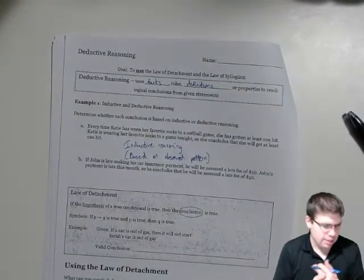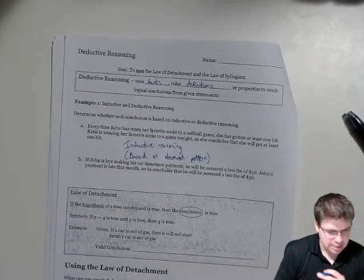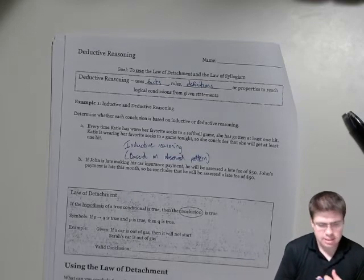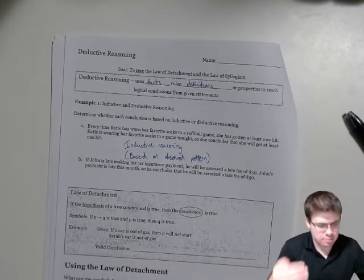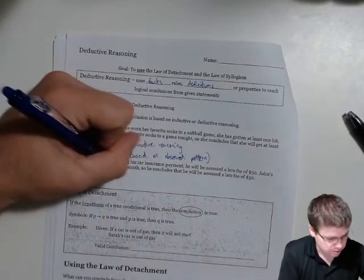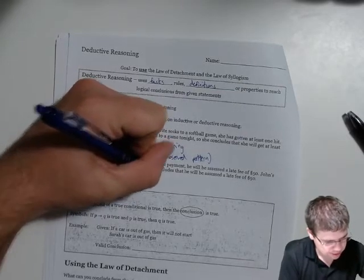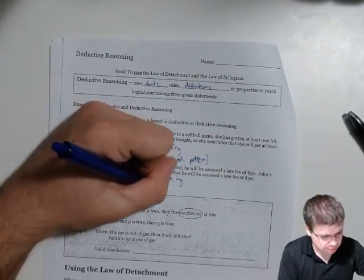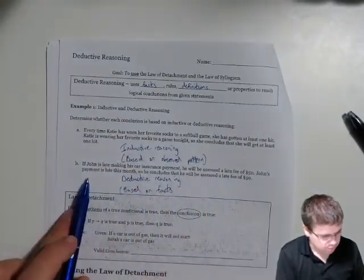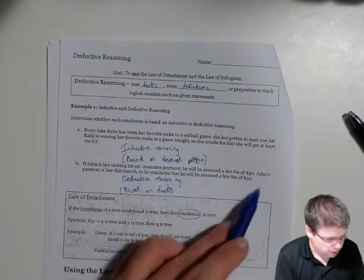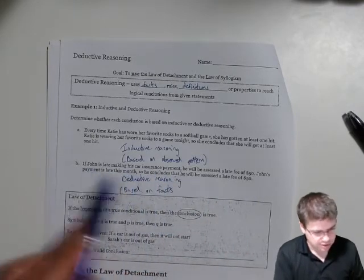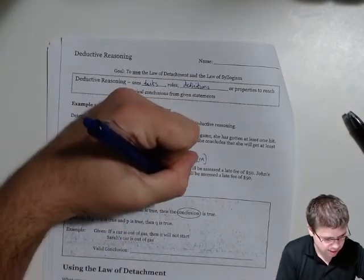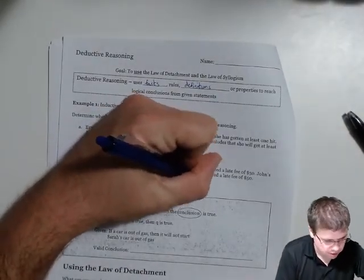And then, if John is late making his car insurance payment he will be assessed a late fee of fifty dollars. John's payment is late this month, so he concludes he will be assessed a late fee of fifty dollars. So that's not a pattern, this is based on facts and rules, right? So this is deductive reasoning. And this is because it is based on facts. The fact that John's payment is late this month, that is a fact. If John's payment is late then he's assessed a fee of fifty dollars, that is a rule. So based on facts and rules and maybe definitions and properties, that is some deductive reasoning.